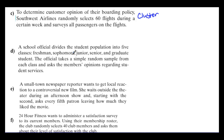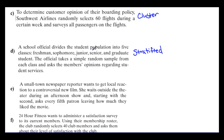For D: a school official divides the student population into five classes — freshmen, sophomores, juniors, seniors, and graduate students — then takes a simple random sample from each class and asks their opinions regarding student services. They've divided into five homogenous, non-overlapping categories and take a sample from each. This is stratified sampling.